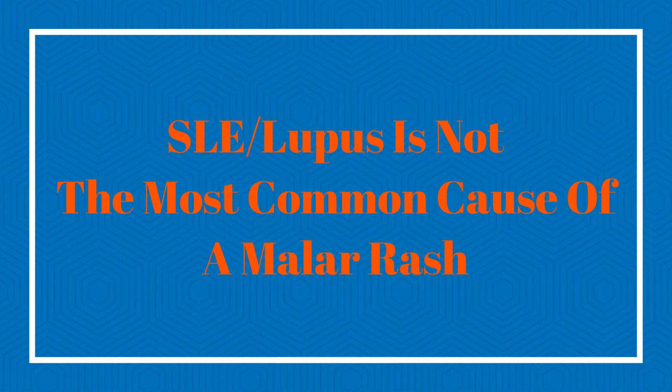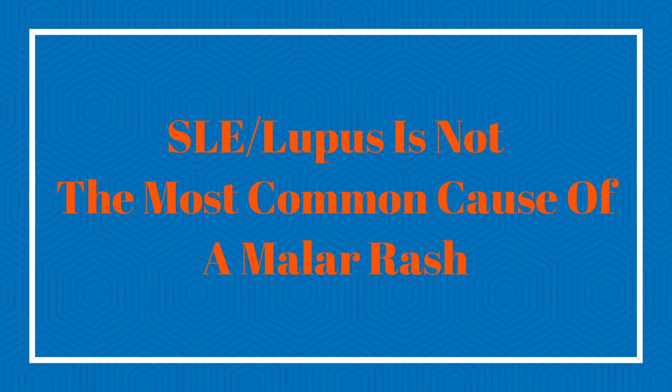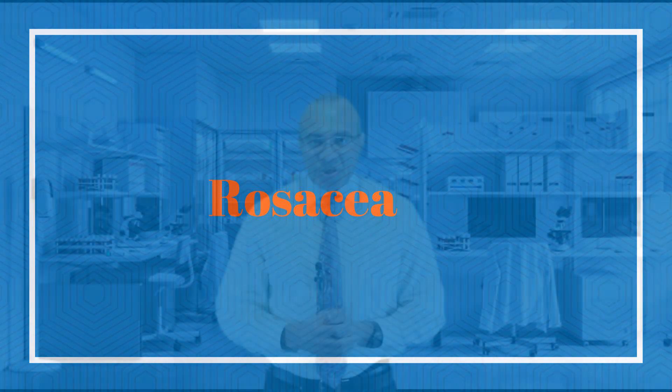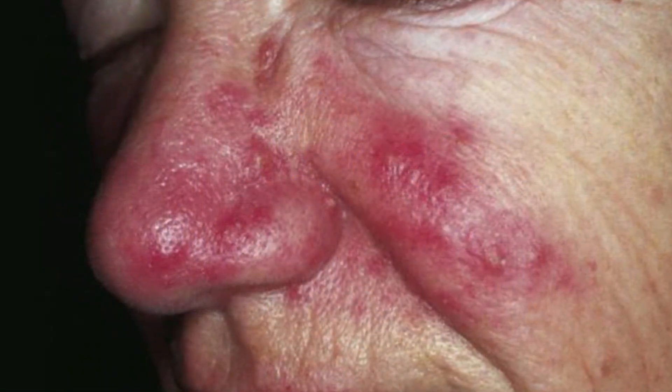The malar rash can present in a variety of illnesses, and in fact SLE or lupus is not the most common cause. Rather, rosacea is the most frequent cause of a malar rash. Rosacea is an inflammatory condition of the skin of unknown etiology. It involves inflammation and redness of the skin that can sometimes be accompanied by pustules, bumps, and dilated blood vessels. Rosacea is never accompanied by systemic symptoms such as fever or chills.